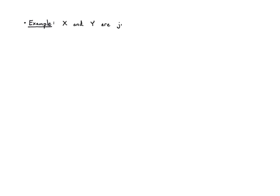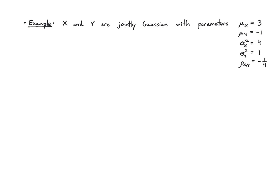Let's work through a long example of a jointly Gaussian pair of random variables. So let's say X and Y are jointly Gaussian, and we'll give you the five parameters at the outset. So usually we specify these by their means: μx is 3, μy is minus 1, the variance of X is 4, the variance of Y is 1, and finally the correlation coefficient is minus 1/4. Equivalently I could have told you the covariance, but here I gave you the correlation coefficient. We're going to define two new random variables through linear functions: W is X minus 4Y plus 1, and Z is 2X plus 4Y.